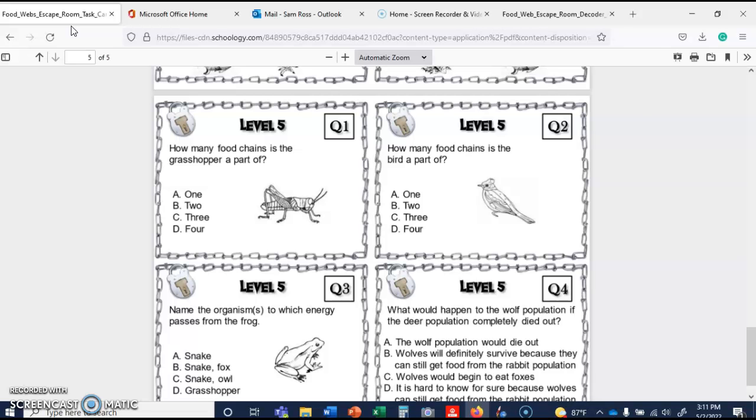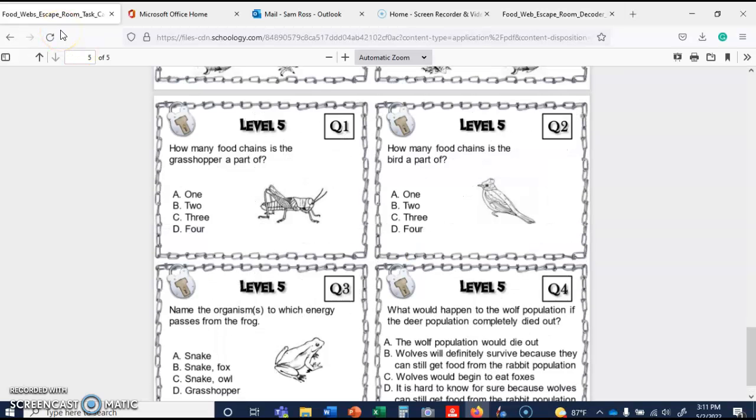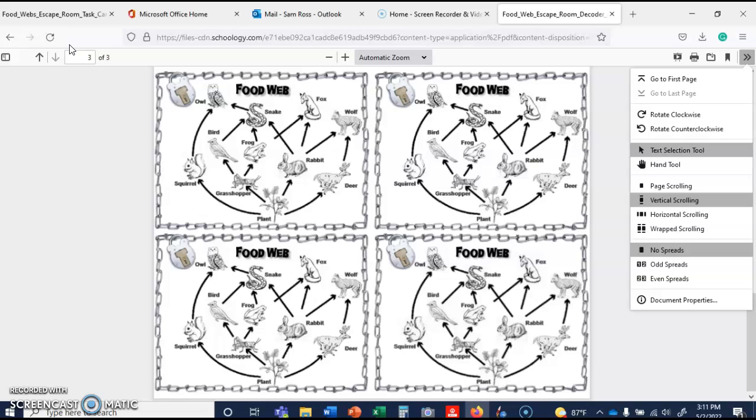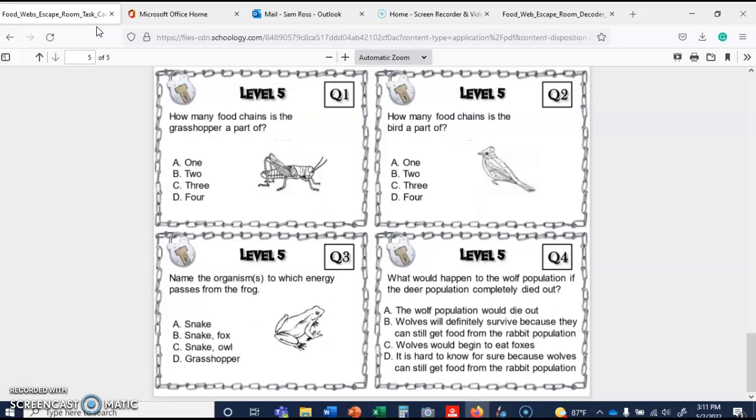Level five. How many food chains is the grasshopper part of? So grasshopper is here. So we have this one. And we have this one. I want to say two, but I'm not sure if that's a level five. It's three. Good grief. I'm always one off. So that's going to be three. How many food chains is the bird part of? Let me see if I can get this one. So bird. So we have one. Is it one or is it two? Because I need to add one. So question two is, it is one. Yay. I got that one right.